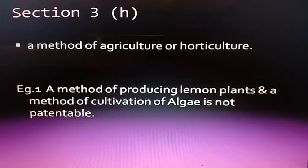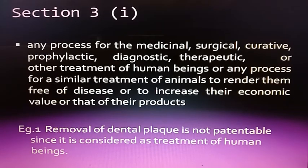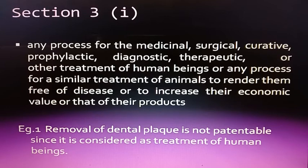Section 3(h): A method of agriculture or horticulture is not patentable. Any process for the medicinal, surgical, curative, prophylactic, diagnostic, therapeutic, or other treatment of human beings, or any process for similar treatment of animals to render them free of disease, or to increase their economic value or that of their products, are not patentable.